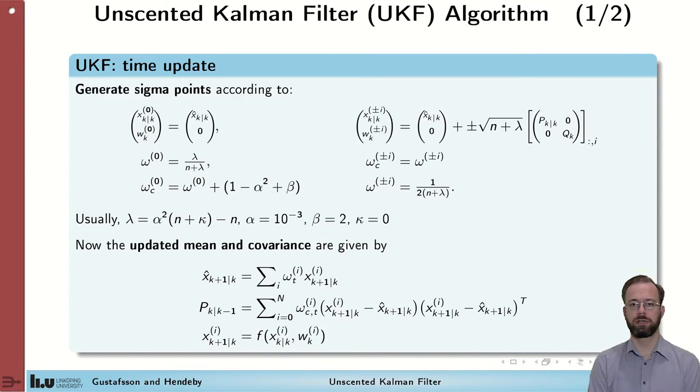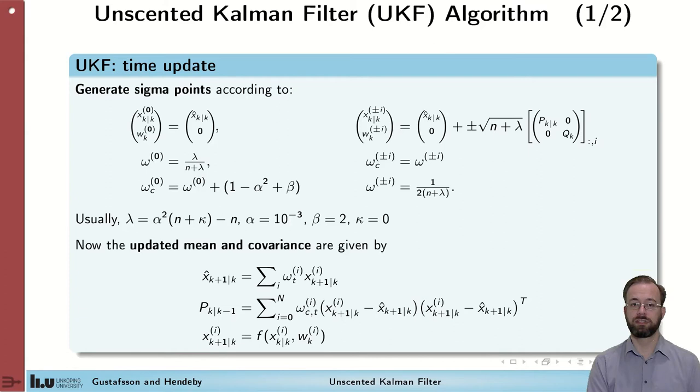The expressions for the unscented Kalman filter are quite involved, and we won't go through all details here — this is what you obtain when applying the unscented transform in all the steps involving nonlinear transformations. For full details, please read the textbook. The key idea is that first, we generate sigma points to represent the state and the process noise uncertainty. For how to do this, please consult the module on sample-based nonlinear transforms, where you'll find all the details.